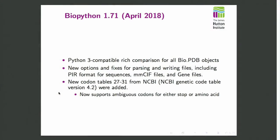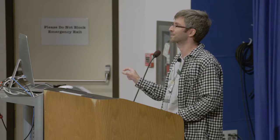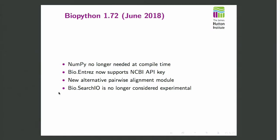We did two releases this year. A few more bits of Python 3 compatibility work — BioPython has attempted to support Python 2 and Python 3 simultaneously for some time now. One of the things we're still working on is improving our test coverage. A few more bits of parsing support. NCBI codon tables — they have codons that can either be an amino acid or a stop codon depending on the context, which is horrible from a computer programming point of view. The second release literally went out just before the conference; I pushed it to the Python Packaging Index from the airport on my way here. Some technical improvements: we no longer need NumPy at compile time, just at runtime.